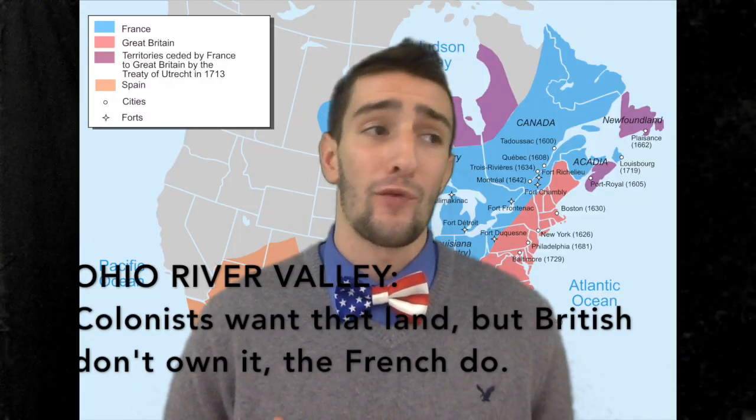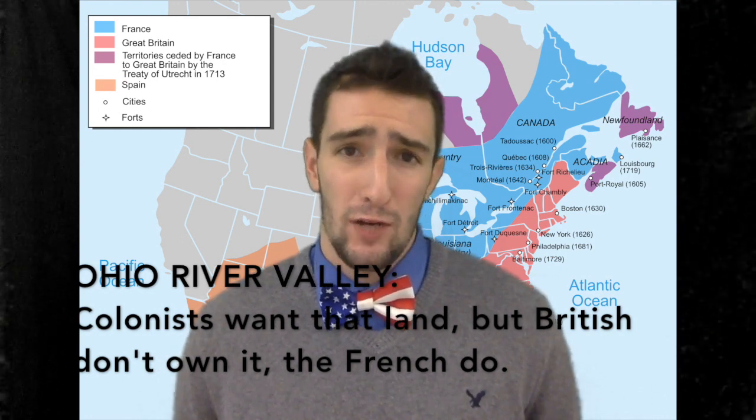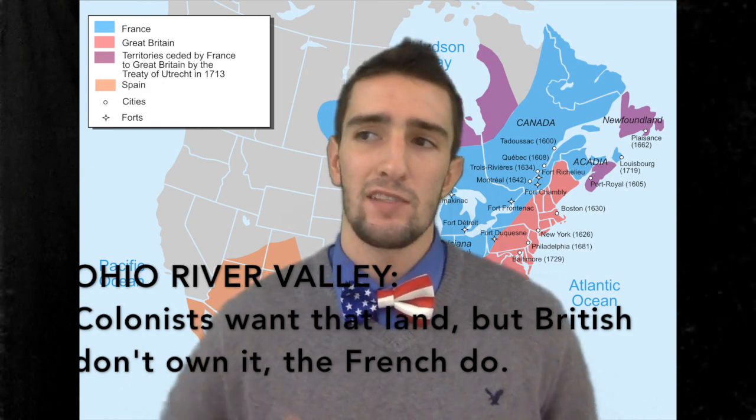The first event in American Revolutionary history was at the end of the French and Indian War — that war that took place because the American colonists wanted the Ohio River Valley. That was land the British didn't have; the French actually owned it. The French said the colonists couldn't just go in and take it, but the colonists ignored them anyway. George Washington was the leader of that army, and they got their butts kicked — and thusly, the French and Indian War begins.